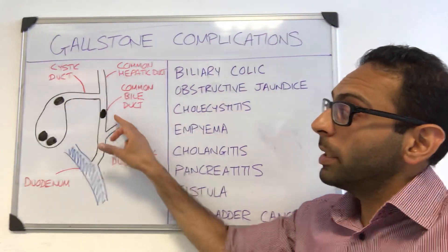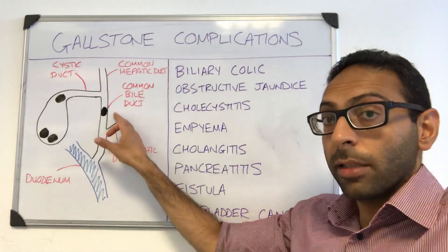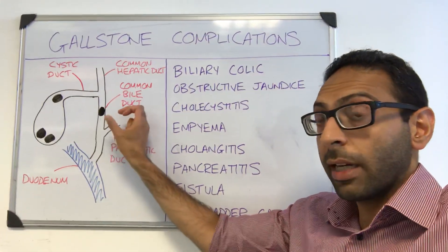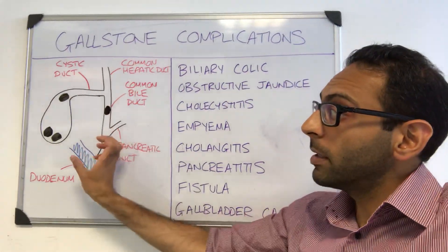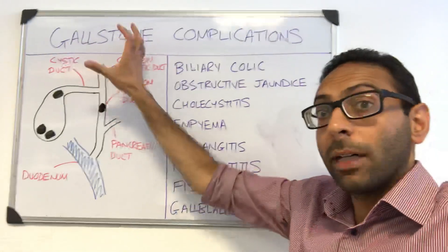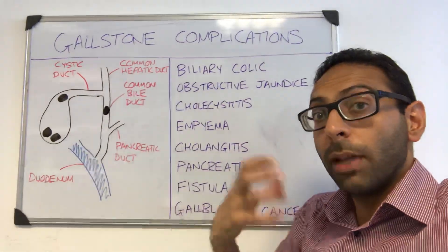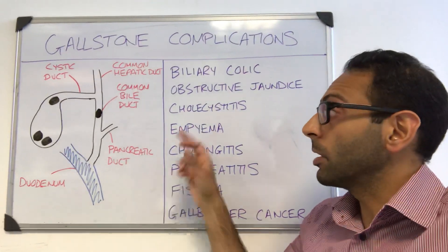Obstructive jaundice happens when you get a blockage in the common bile duct. A stone gets stuck here and the bile that's supposed to flow into the duodenum dissipates back up into the bloodstream, giving you the obstructive jaundice picture.